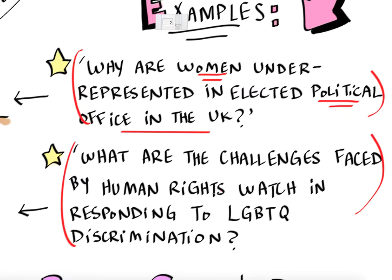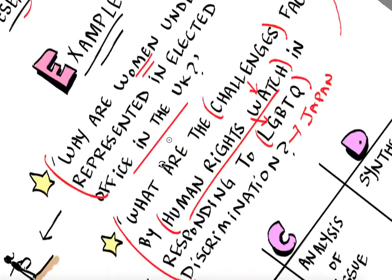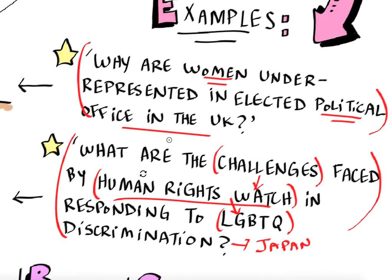Another example might be: what are the challenges faced by Human Rights Watch in responding to LGBTQ discrimination — and you'd probably isolate this to a particular country, let's say Japan. The issue is discrimination against the LGBTQ community, you're looking at a specific NGO, and you're looking at the challenges they face in tackling this issue. An activity might be visiting the Office of Human Rights Watch, discussing the issue, seeing what plans they have in place, and maybe collecting stories from people they've worked with.